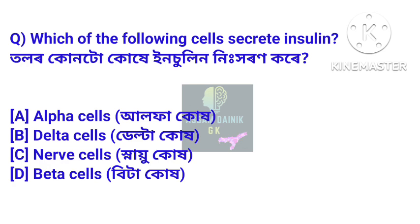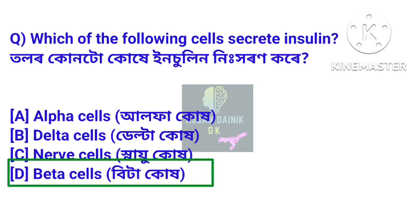Which of the following cells secretes insulin? Answer: Beta cells. Beta cells secrete insulin and regulate its activity.